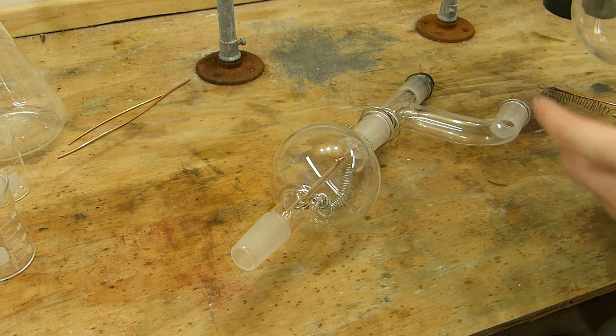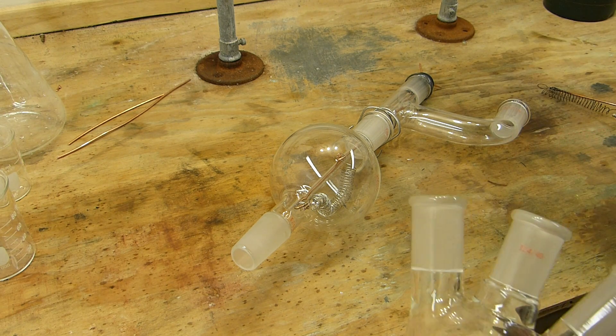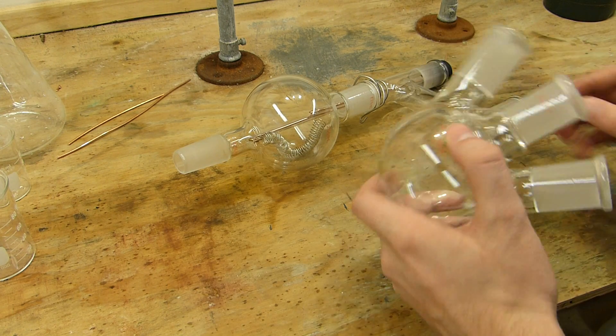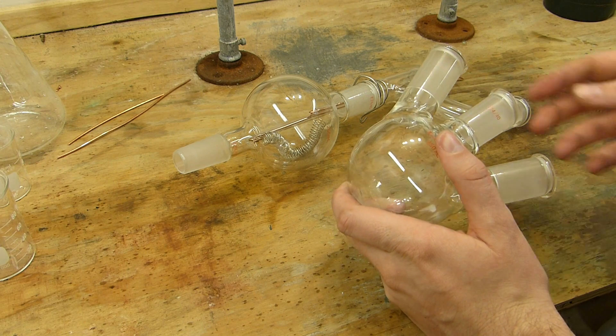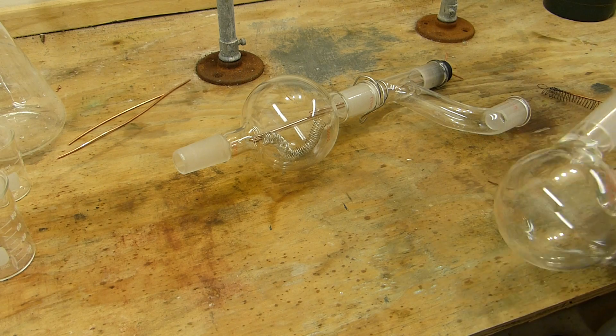So I've built what's known as a ketene lamp before, which is basically a device that pyrolyzes acetone at high temperature into a compound known as ketene, which then reacts with water or acetic acid to form acetic anhydride. It's an interesting process. It works really well. It's robust. It just takes a while.